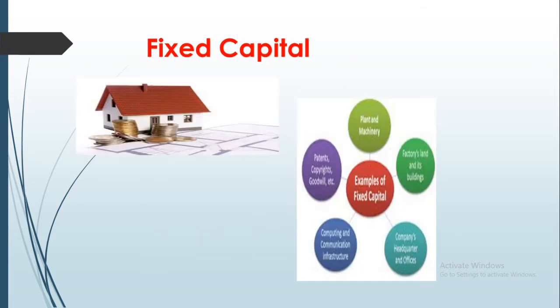Let us discuss the first, that is fixed capital. What is fixed capital? See this image — this is the image of a fixed asset, that is a building or a house, and there are many examples given here. Fixed capital is that portion of total capital which is invested in fixed assets like land, building, plant, machinery, equipment, furniture, etc. These fixed assets, called sthaii sampatti in Hindi, can be purchased and resold if needed. Fixed assets stay or remain in business for a long period, that is almost permanently. So fixed capital is required initially at the time of establishment of a business firm or company.